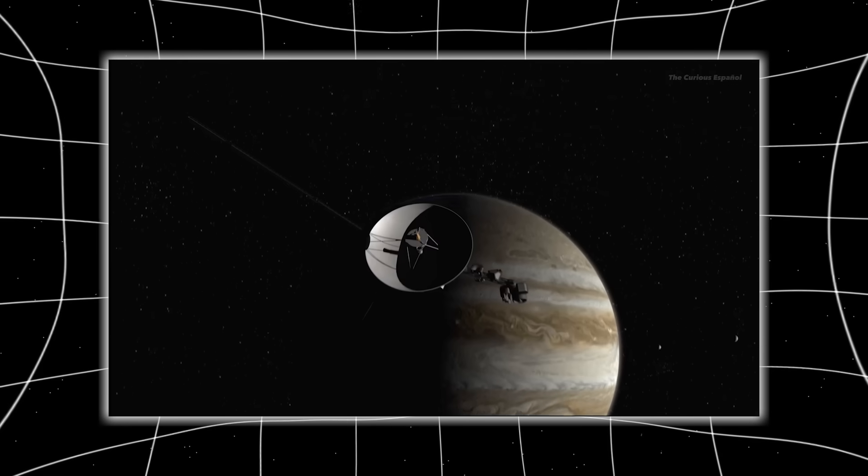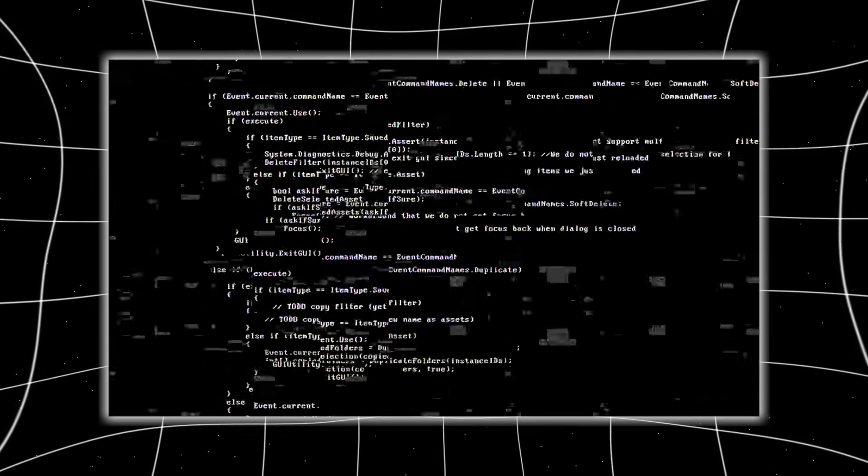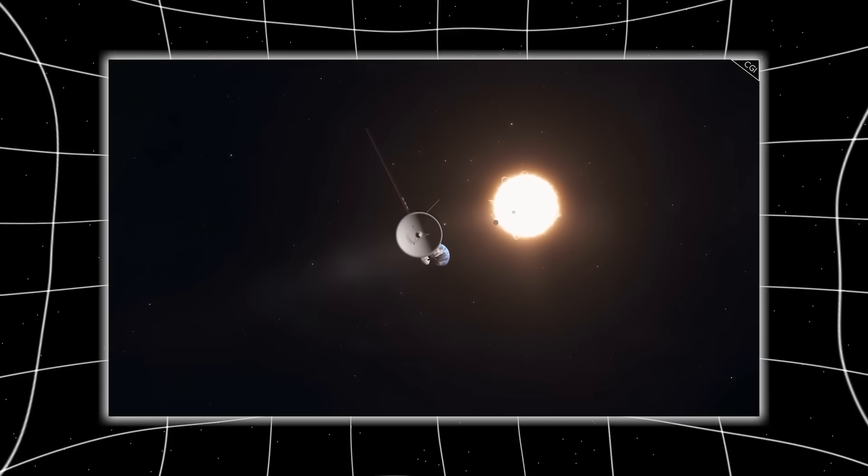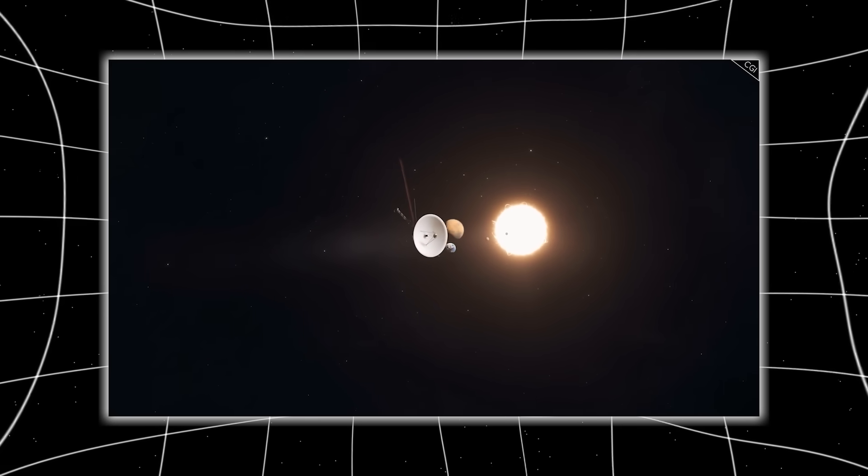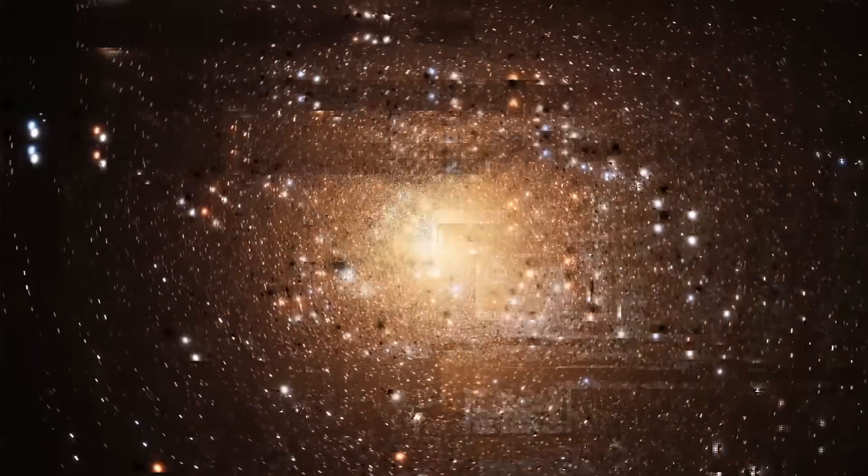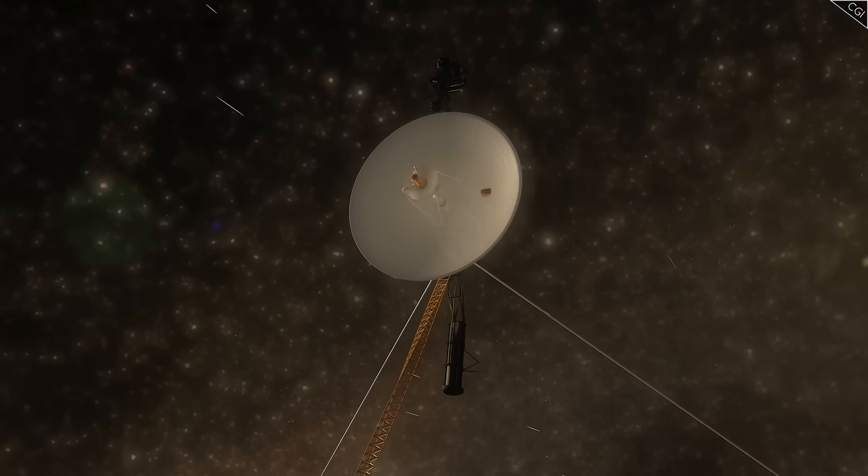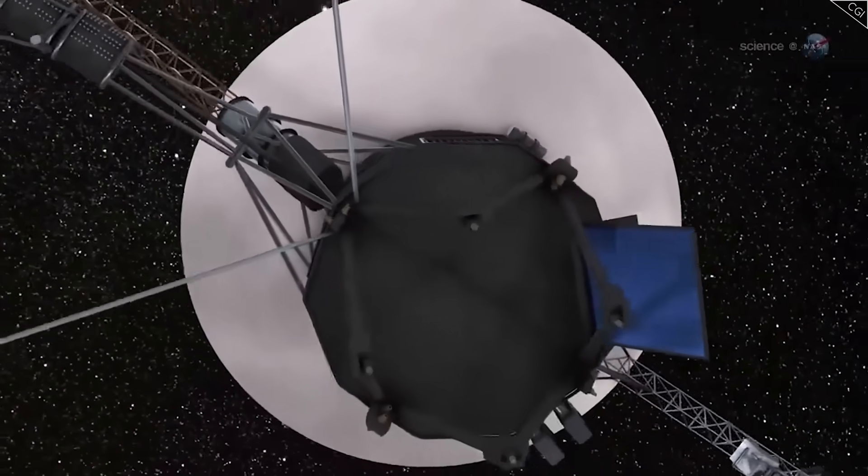Voyager 1's trajectory, once believed to be set in stone, appears to have been subtly redirected via long-range communication pulses. This wouldn't mean physically turning the probe, but rather recalibrating its instruments to gather data from a new region of space, exactly where Atlas would pass. And if this is true, then Voyager 1 just became our first interstellar observer in history to attempt contact with a body from another star system.